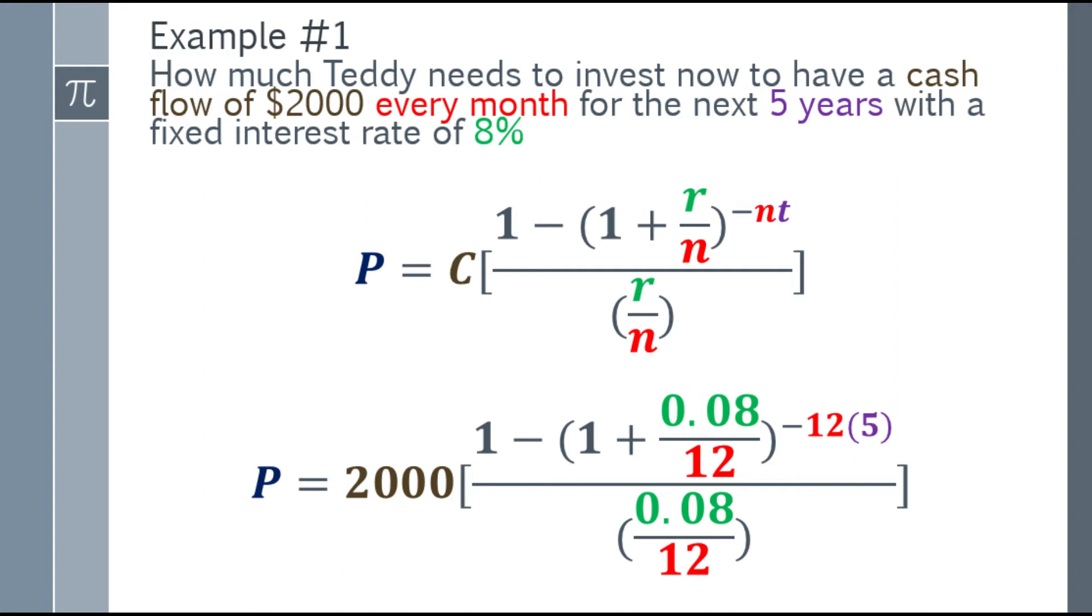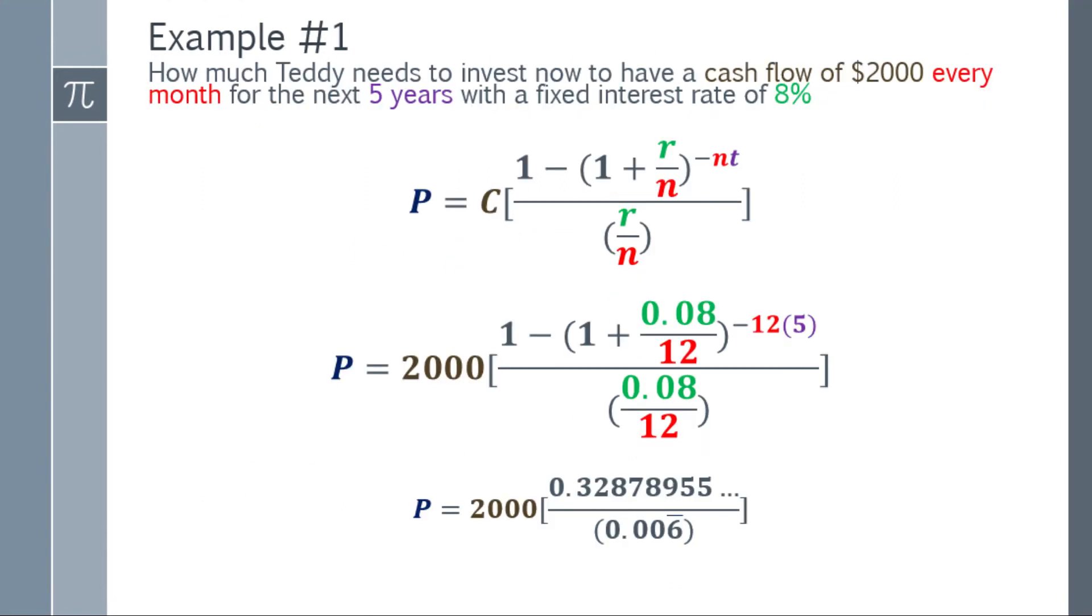In the denominator, that will be 0.08 over 12. Next step, simplify the numerator and denominator. Make sure to go directly into the calculator. The numerator answer will be 0.32878955 and decimal.